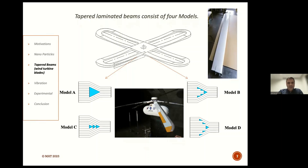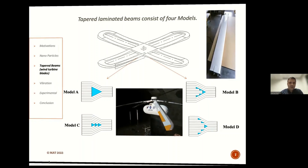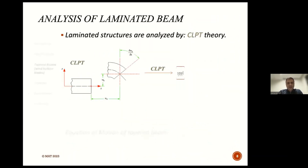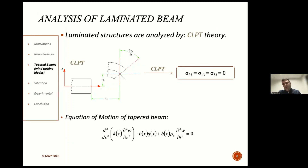In this slide, you can see four models of tapered laminated composite beams: Model A, B, C, and D. In order to determine the equation of motion of tapered laminated composite structures and the numerical solution, CLPT theory is used.